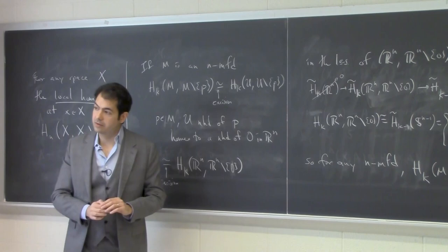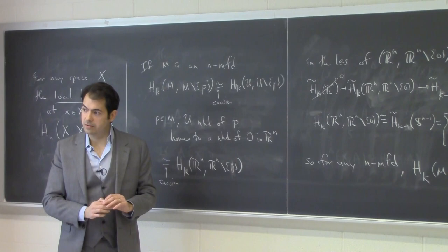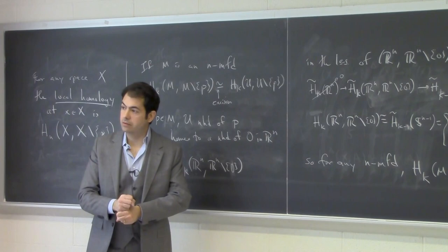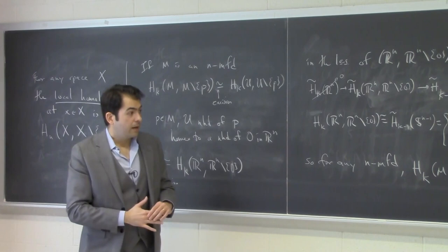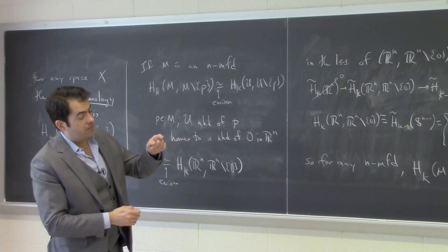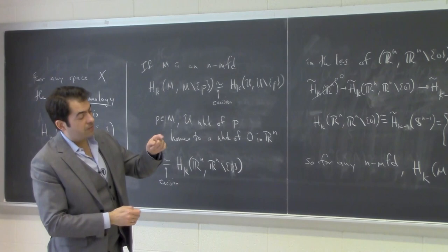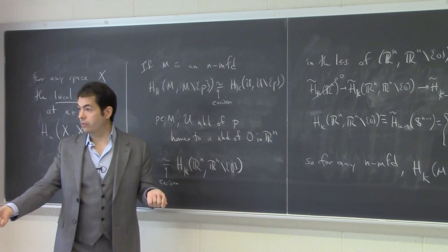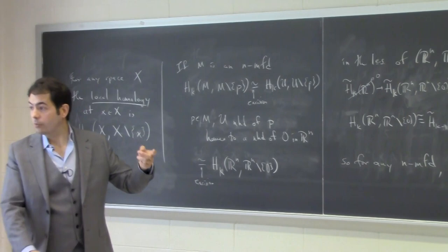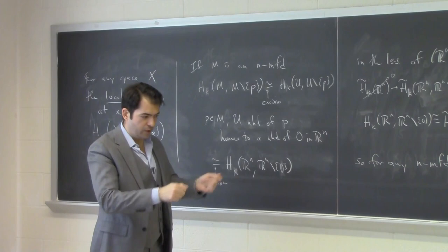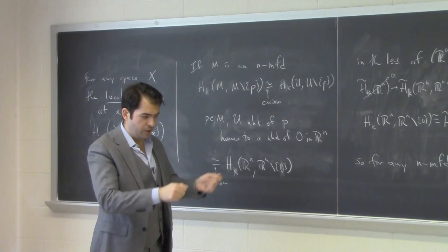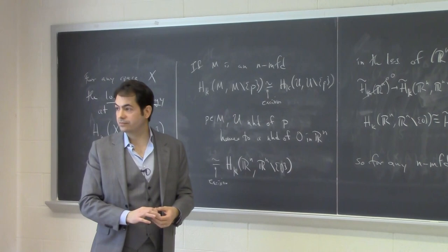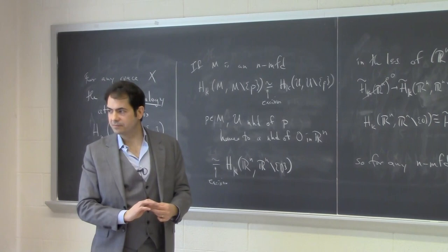A student asks why the theorem requires homeomorphism rather than homotopy equivalence. The answer: homology is invariant under homotopy equivalence, but the operation of removing a point isn't. If our map were to take R^n and collapse it to a point, then subtracting a point from the left gives nothing on the right. That's the key. This invariance of dimension was originally proved by Brouwer, though not using homology — he used the degree of a map.